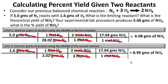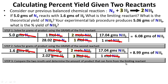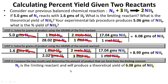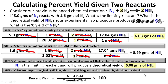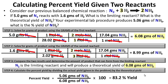Step three: compare the two results and determine the amount of product that can form from the limiting reactant. The smaller number tells us N2 is the limiting reactant, giving a theoretical yield of 6.08 grams of NH3. Step four: calculate percent yield by dividing the actual yield (5.06 grams) by the theoretical yield (6.08 grams), then multiply by 100 — giving us an 83.2% yield.